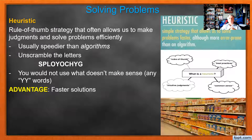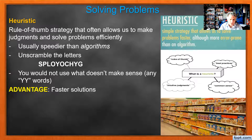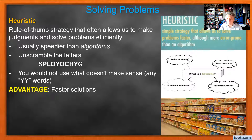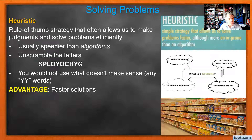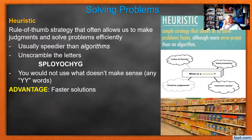A heuristic, on the other hand, is how we solve most problems — a rule of thumb strategy that allows us to make judgments, usually speedier than an algorithm. For example, if you were out of cereal and wanted cereal for breakfast, most of you would say go to the store and get some. You'd go to HEB, go to the cereal aisle, grab a box, pay for it, take it home, eat your cereal. That is a very good solution, a very effective solution, and one that has always worked for you. But is it the best solution?